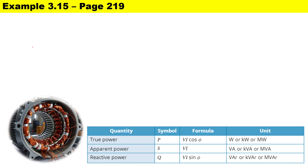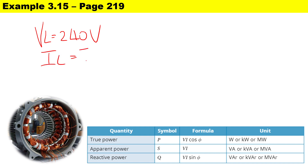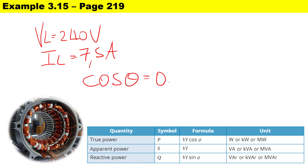Let's first write down the information given. We are given the supply voltage of 240 volts, the supply current of 7.5 amperes, and the power factor, which is cos θ, equal to 0.9. That's quite a good power factor, which means it has high efficiency.